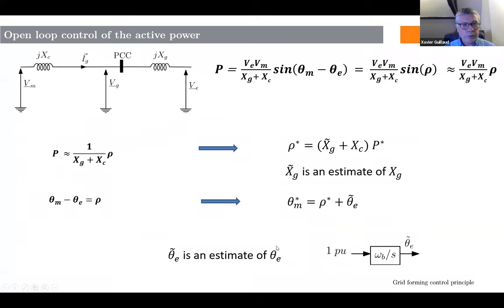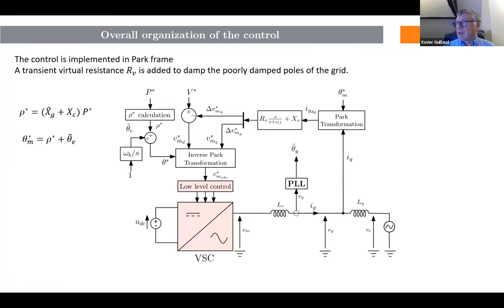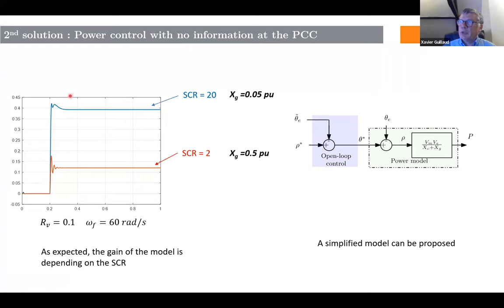This is a very basic control — a theoretical control that would not work in real life — but it gives a clear understanding. We have P* as the reference active power, from which we define the angle. If we apply a step on P* and we have added a damping resistance, we can see that depending on the grid impedance — the short-circuit ratio — the gain is modified, which was quite expected, since the gain of the system depends on X_a as the connection impedance and X_g as the grid impedance.